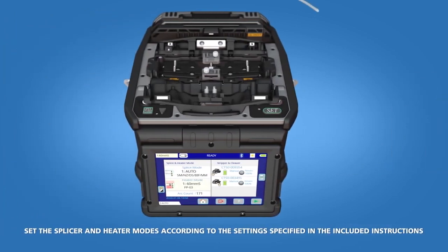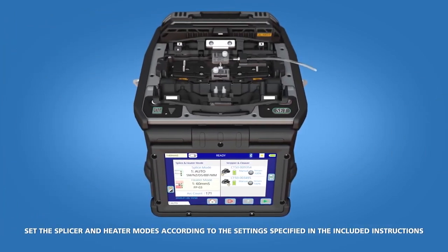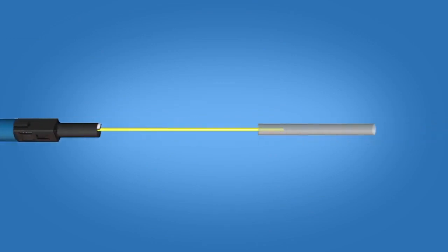Begin by loading the ferrule unit into the right side of the Fusion Splicer. Slide the connector boot and protective sleeve onto the fiber.